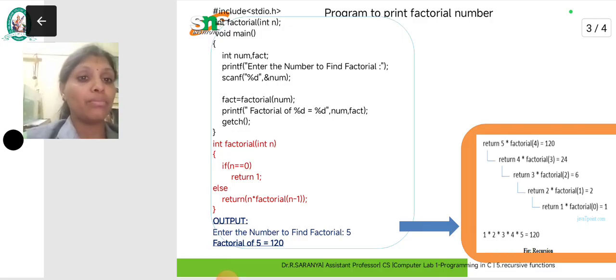So how does this work? n into factorial of n minus 1. When n value is 5, it's 5 into factorial of 4. Then factorial of 4 is 4 into factorial of 3, and so on.